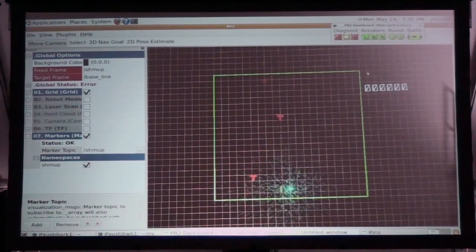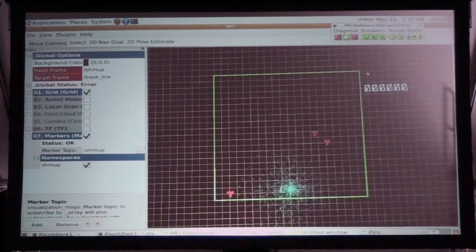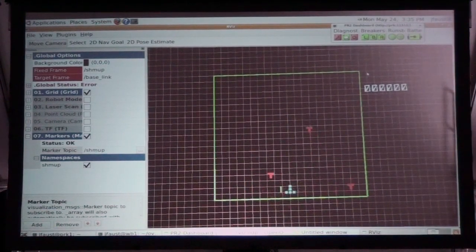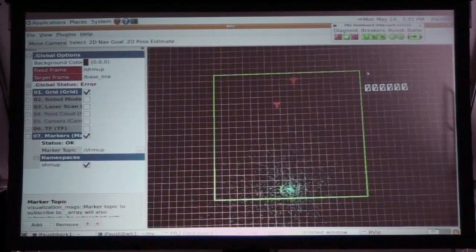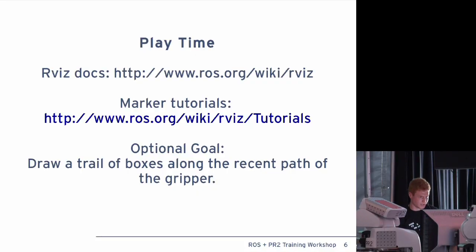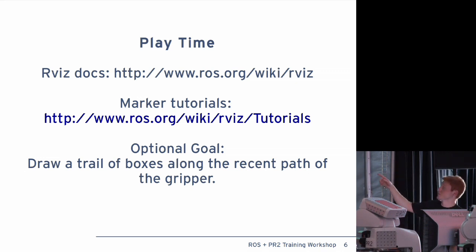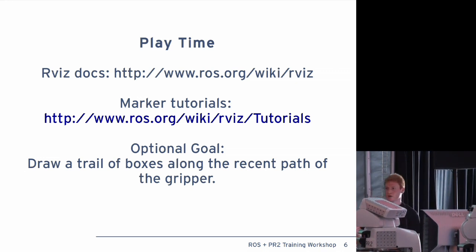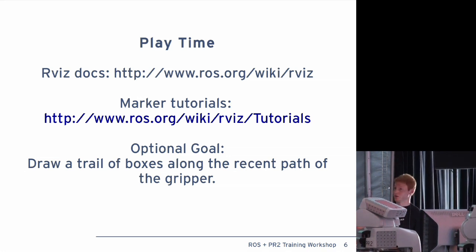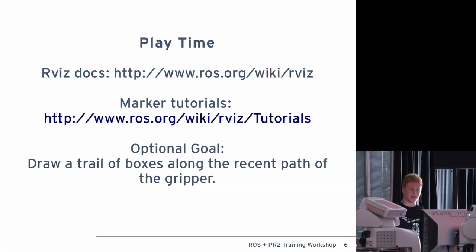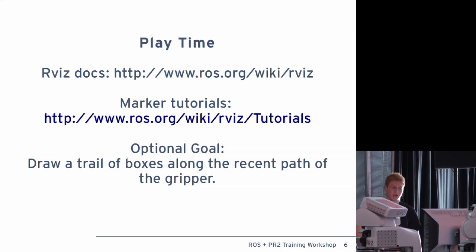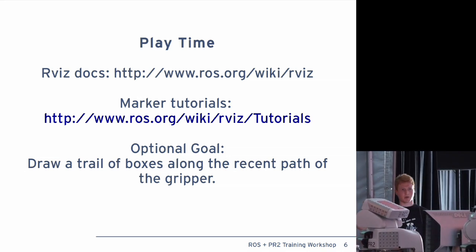That's essentially it for the canned demo. If you guys have any questions, or you want me to show something else, or you're confused with anything right now — all right. So I'm just going to leave you guys to some play time. The Arviz docs are right there, there are some marker tutorials. You're welcome to just play around with the sensor data, play around with the robot, see it in Arviz. But if you want a goal and you want to start sending some markers, try to have it draw a trail of boxes along the path of the gripper as the gripper moves.